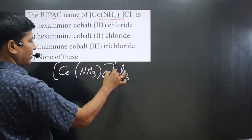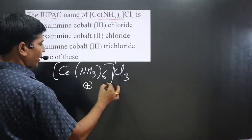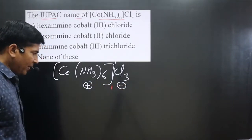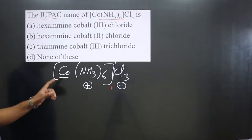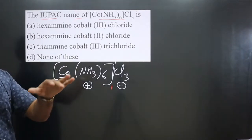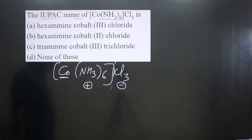If you break this complex from here, first one is the positive part, second one is the negative part. You can see the central element is present in the positive part. It means we have to use its common name as given in the periodic table, cobalt, in the naming.